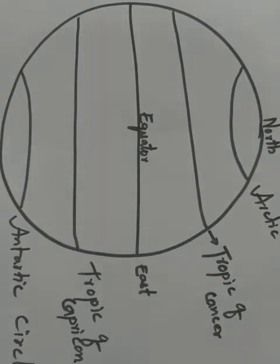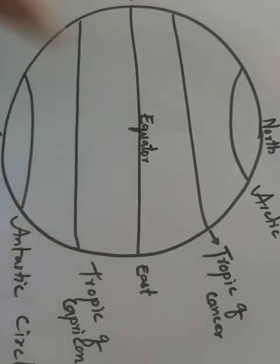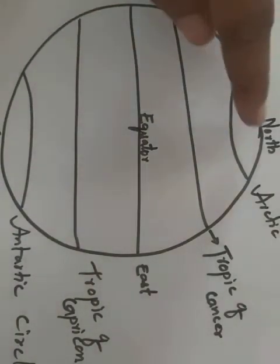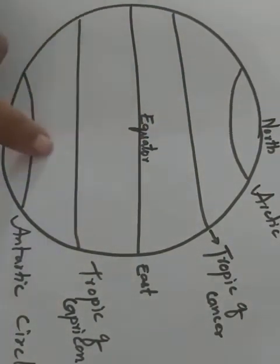What is globe, children? Globe is nothing but the model of the Earth. First, let's see what are the latitudes. Do you know children, what is the meaning of latitude? The horizontal circle that goes around the globe exactly in the middle at equal distance from north to south poles is called equator. Because it divides the Earth into two equal halves. Here you can see this is the equator.